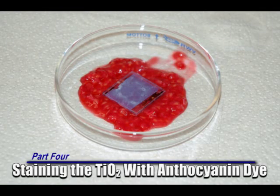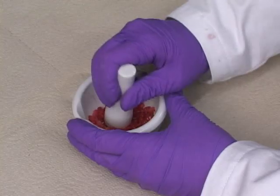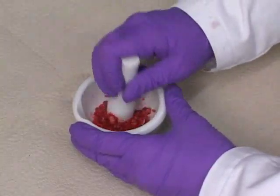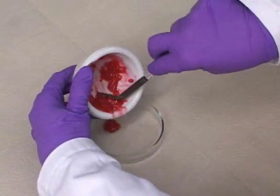Part 4. Staining the Titanium Dioxide with Anthocyanin Dye. Step 1. Use a clean mortar and pestle to crush 3 to 4 berries. Transfer the crushed berries to a petri dish.